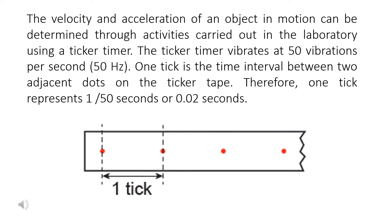Activity using ticker tape. The velocity and acceleration of an object in motion can be determined through activities carried out in the laboratory using a ticker timer. The ticker timer vibrates at 50 vibrations per second.